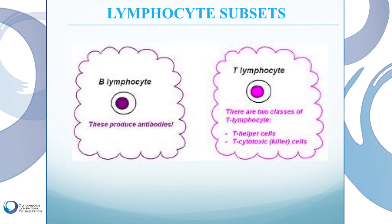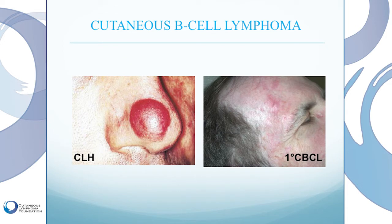Lymphocytes are categorized into two different classes. B cell lymphocytes or B lymphocytes are those that make antibodies. The other major category are T cells, further subcategorized into helper T cells and killer T cells. Helper T cells help in initiating immune responses, and killer T cells are involved in eliminating germs and different proteins. The term cutaneous T cell lymphoma refers to a lymphoma of T lymphocytes that occurs on the skin. Just as there are lymphomas of T cells, there are also lymphomas of B cells. Here you see photographs of B cell lymphoma presentations — typically red or purple nodules, such as a red nodule on the nose and plaques about the forehead and temple.